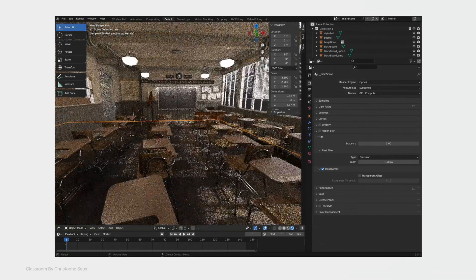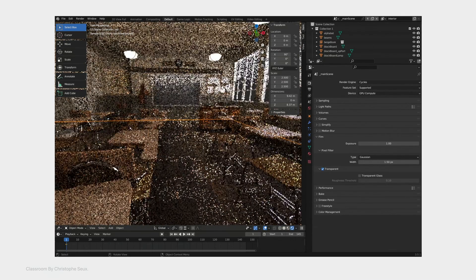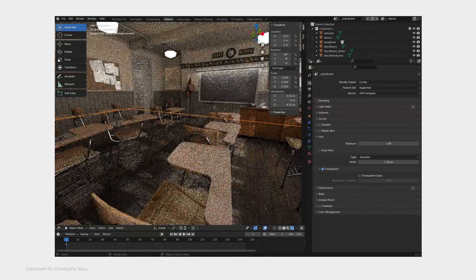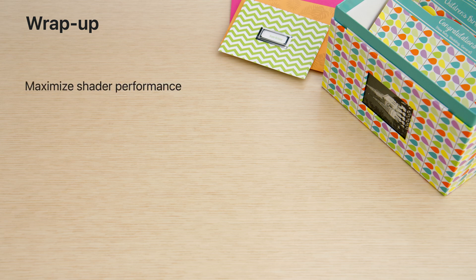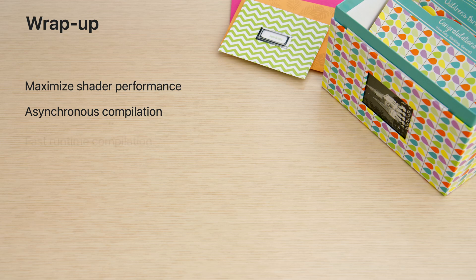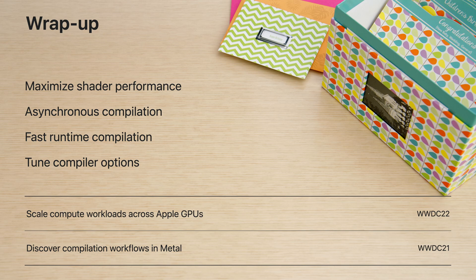The Cycles path tracer within Blender 3D 3.5 is now well optimized for Metal, and it uses all the best practices covered today. Remember to maximize shader performance of large and complex shaders using function specialization. Use asynchronous compilation to keep the application responsive while generating optimized shaders in the background. Enable dynamic linking for faster compilation at runtime. And tune your compute kernels with new Metal compiler options to get optimal performance. Be sure to check out previous sessions where you can learn how to scale compute workloads for Apple GPUs and discover more compilation workflows in Metal. Thank you for watching.